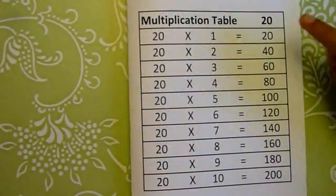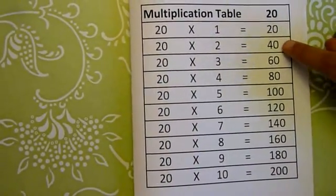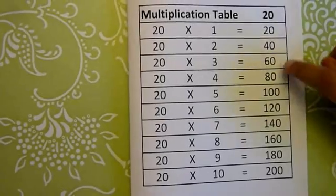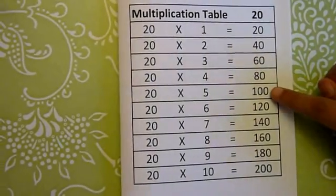Last, we're going to go to multiplication table 20. 20 ones are 20, 20 twos are 40, 20 threes are 60, 20 fours are 80, 20 fives are 100.